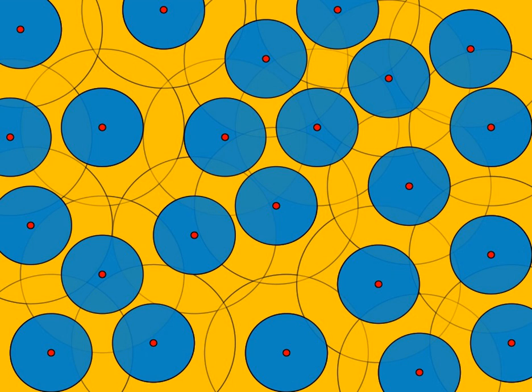A set is uniformly discrete if it has a non-zero packing radius, and relatively dense if it has a finite covering radius. A Delone set is a set that is both uniformly discrete and relatively dense, thus, every epsilon net is Delone, but not vice versa.